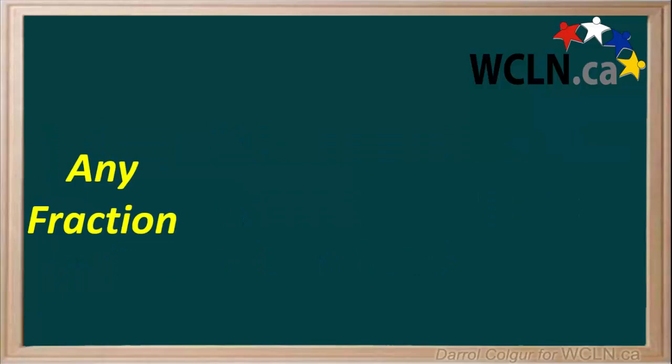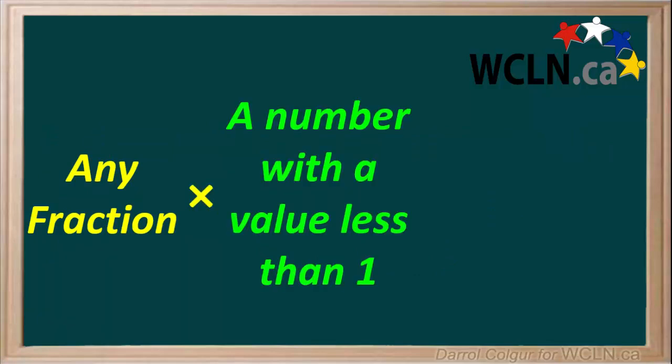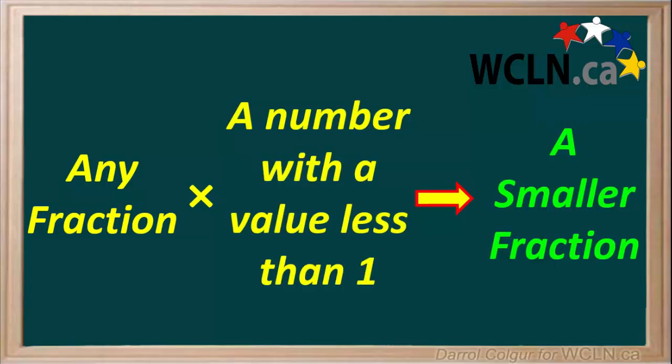So all this makes sense, because if we have any fraction, and we multiply it by a number with a value less than 1, we always get a smaller fraction.